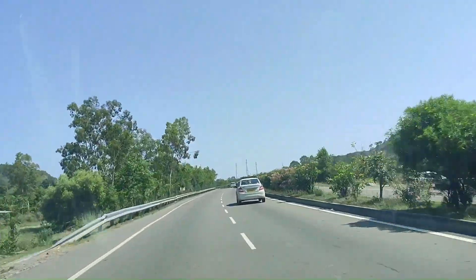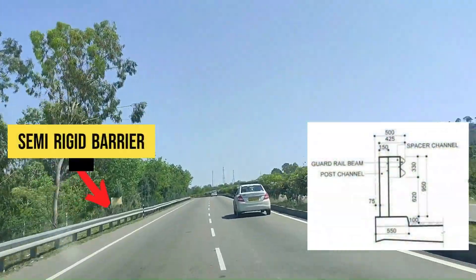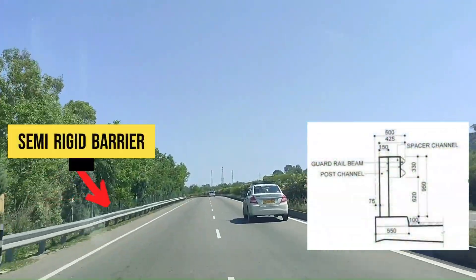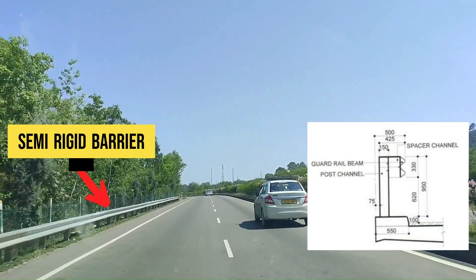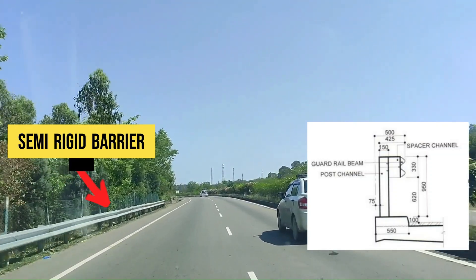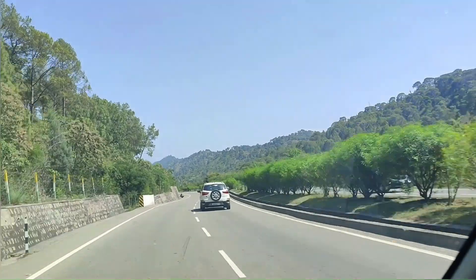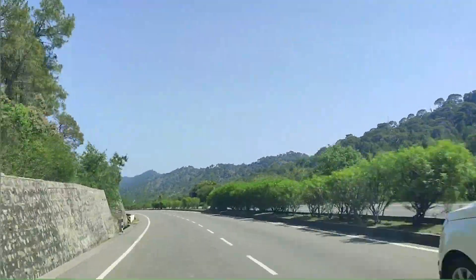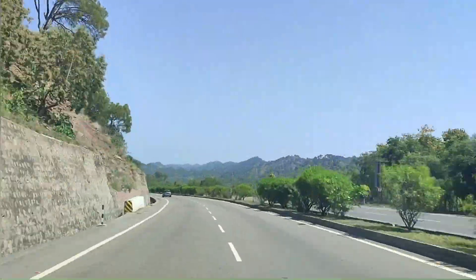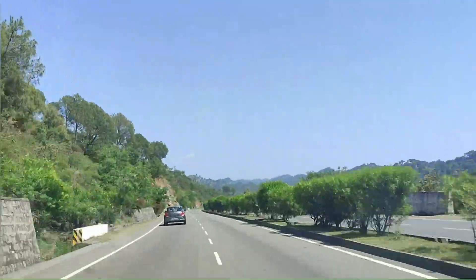Coming up now on the left side is the semi-rigid barrier. This is a single double W-beam barrier. Let's have a closer look at the end — how it is anchored into the ground. You can see it is actually directed into the ground at the ends.